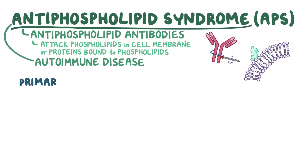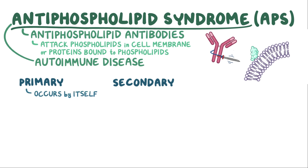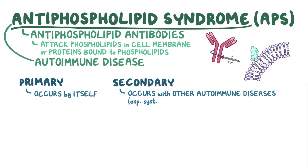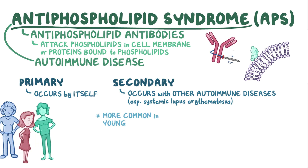Antiphospholipid syndrome can be primary or secondary. Primary antiphospholipid syndrome happens by itself, whereas secondary antiphospholipid syndrome happens with other autoimmune diseases, especially systemic lupus erythematosus. And just like most autoimmune diseases, antiphospholipid syndrome is more common in young females.